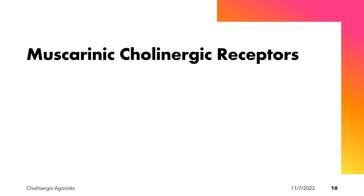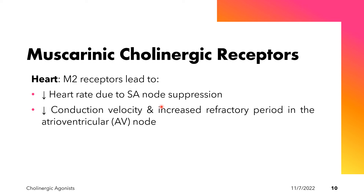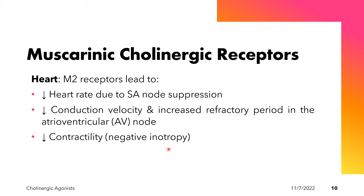Special mention to the heart: via the M2 receptors, activation leads to a decrease in heart rate due to SA node suppression, a decrease in conduction velocity, an increase in the refractory period in the AV node, and a decrease in contractility or negative inotropy of the heart.